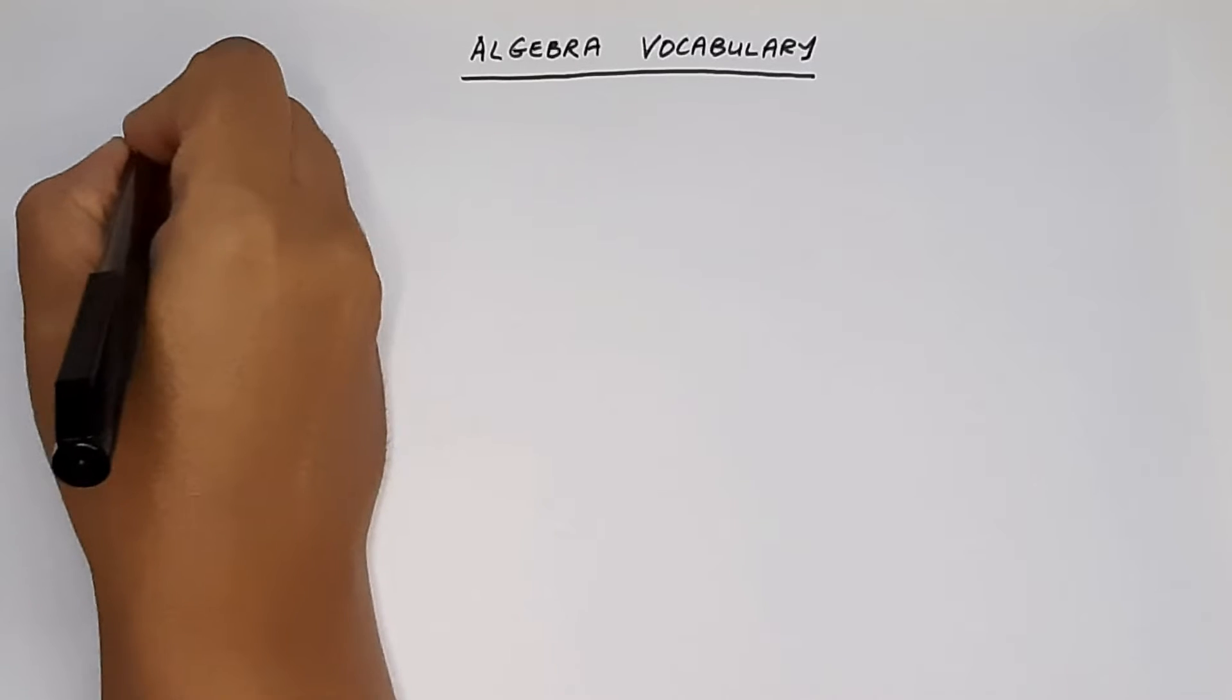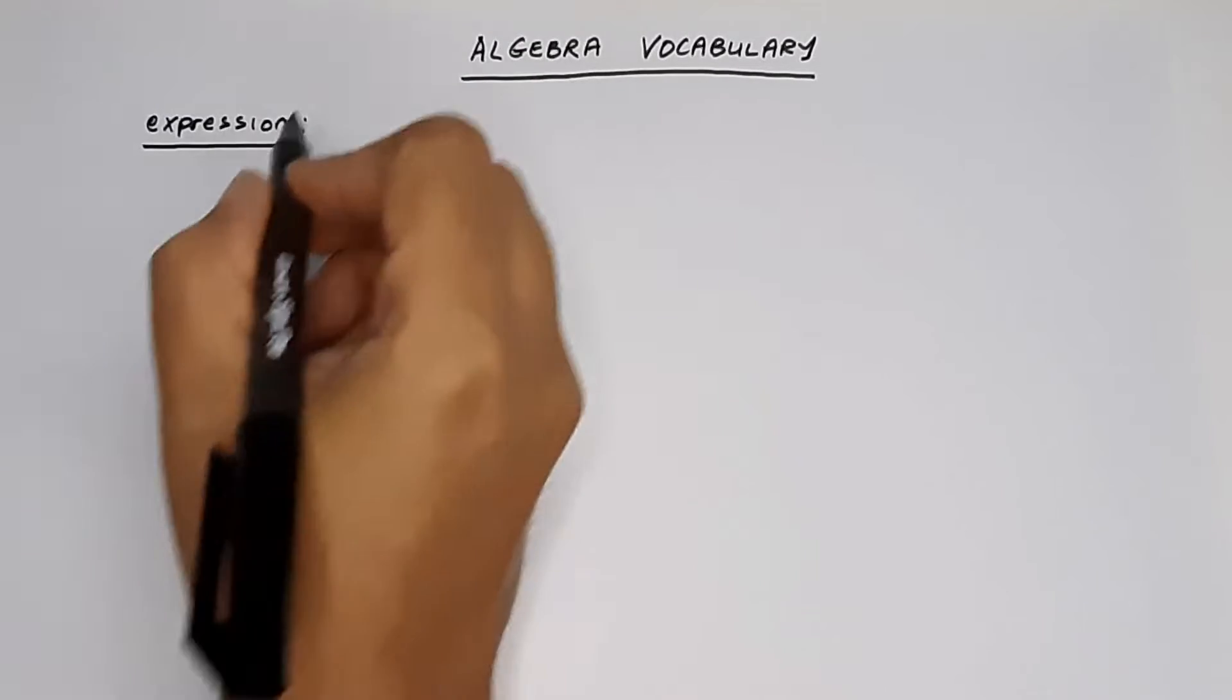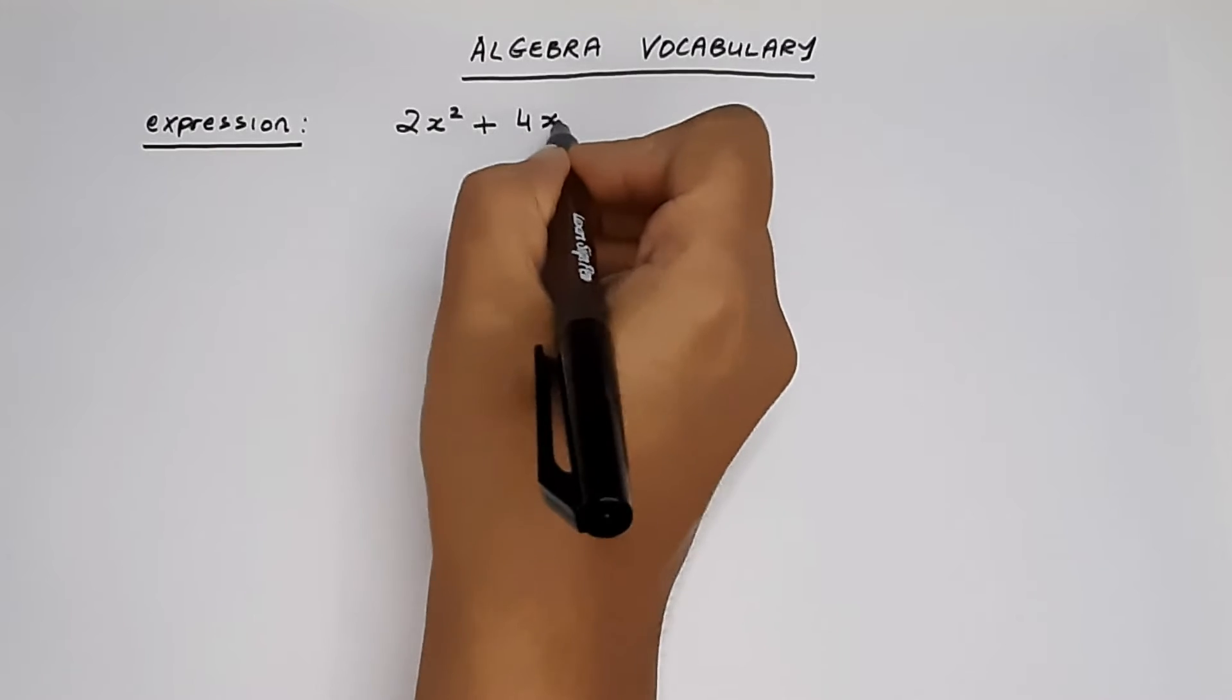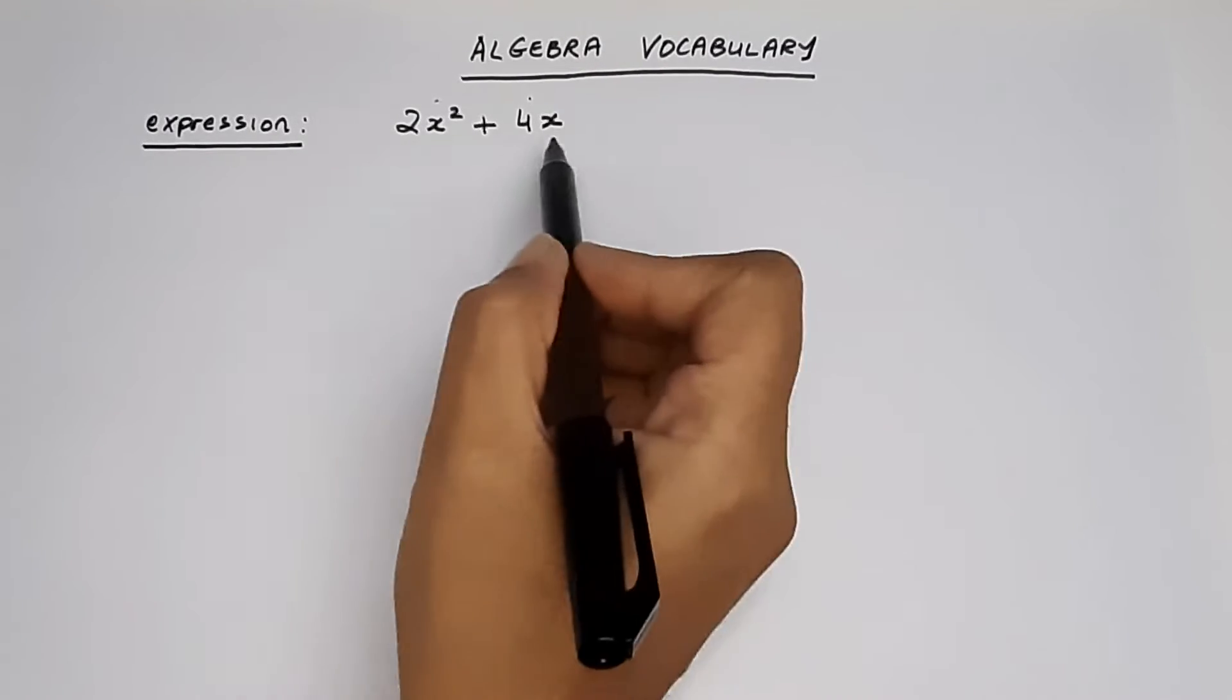Start off with the word expression. Let's take an example: 2x squared plus 4x. This is an expression. It shows how things belong together.